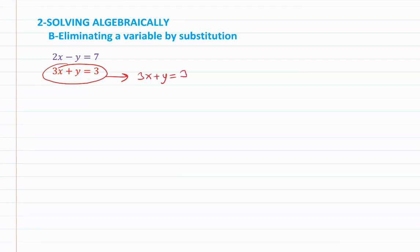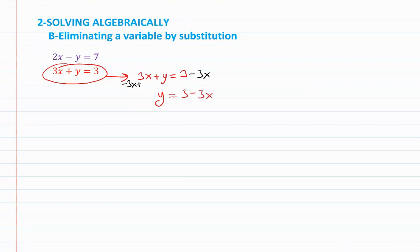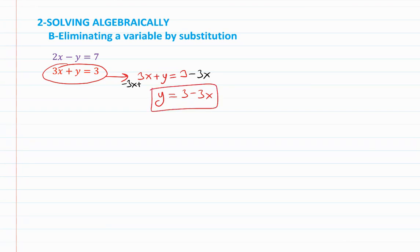From 3x plus y equals 3, subtracting 3x from both sides, I leave y on the left and get y equals 3 minus 3x. This expresses y in terms of x.